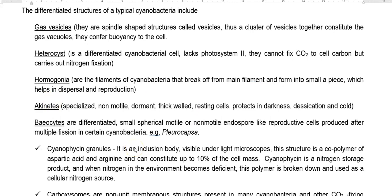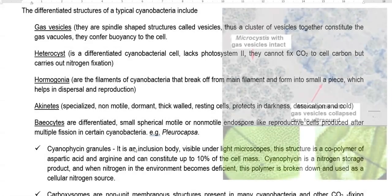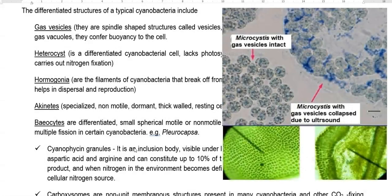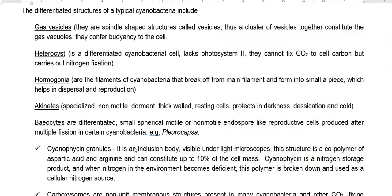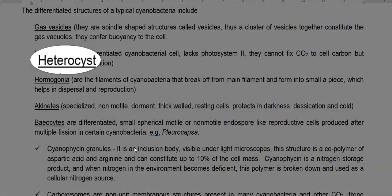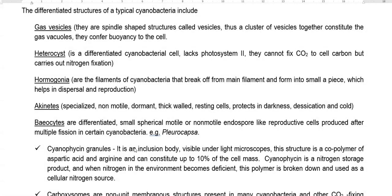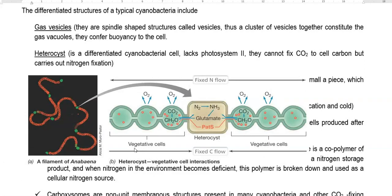Next we look at the differentiated structures of a typical cyanobacterium. First are gas vesicles — spindle-shaped structures that can cluster together to form gas vacuoles, conferring buoyancy to cells and helping them float in water bodies such as pond ecosystems. Next is the heterocyst, a differentiated cyanobacterial cell that generally lacks Photosystem II — the oxygen-evolving system — and thus cannot fix carbon dioxide to cell carbon. It is not involved in carbon fixation but is associated with nitrogen fixation.